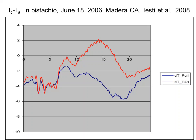Here you see an example of differences between a control fully irrigated treatment (blue line) and a regulated deficit irrigation treatment (red line) — this is pistachio in California, 2006. During the night there is almost no difference, and then during the day the pistachios are cooler than the air throughout the whole period. The cooling is much more important in the case of full irrigation. The deficit irrigated treatment is about five to six degrees hotter than the full irrigated treatment, showing that canopy temperature is quite sensitive to differences in water supply.